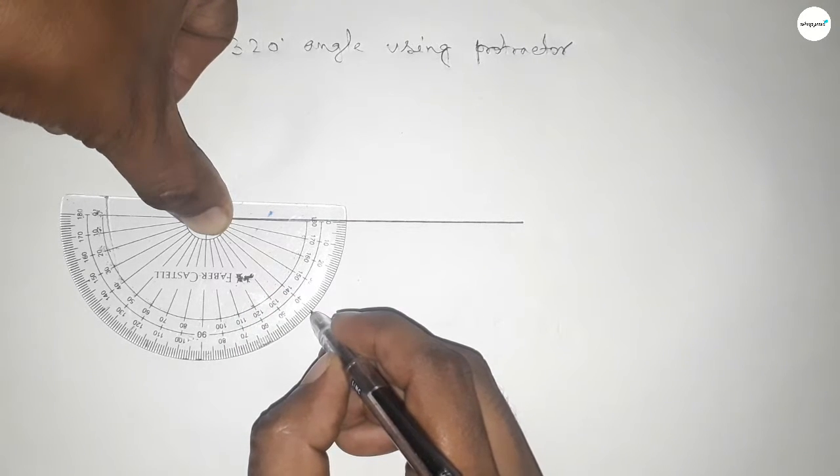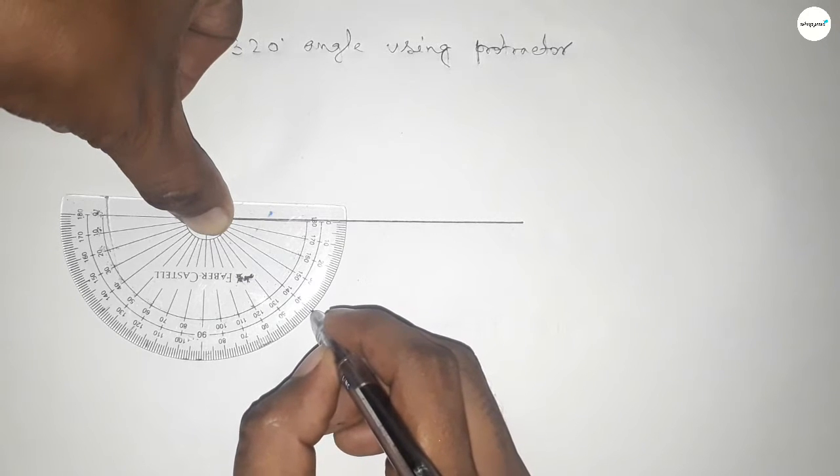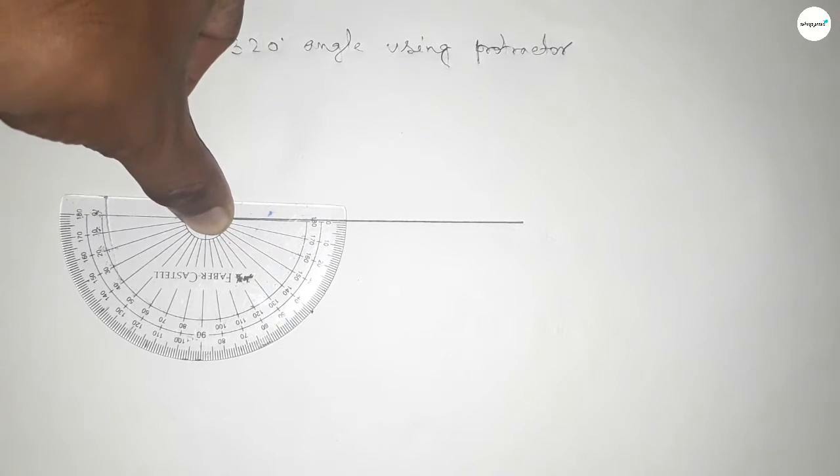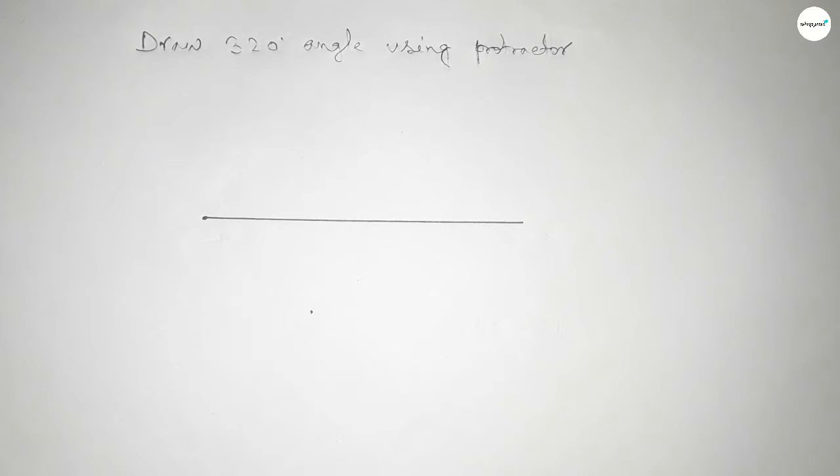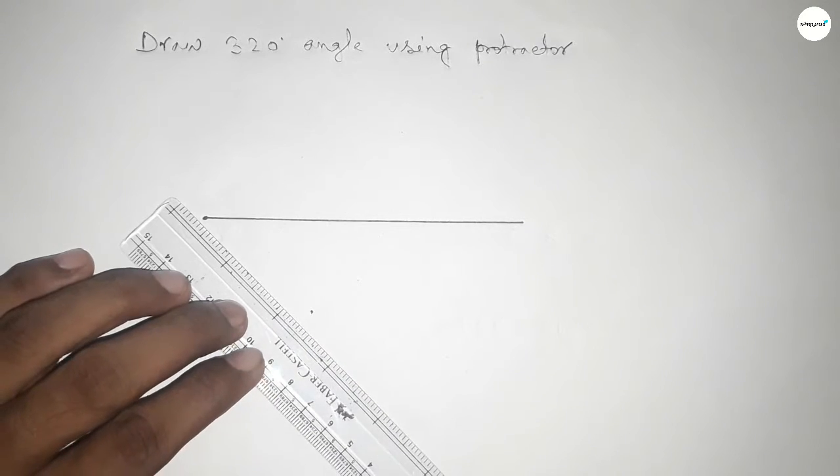So if you add 140-degree angle with 180, then we can get 320-degree angle. Now joining this line to get 320-degree angle.